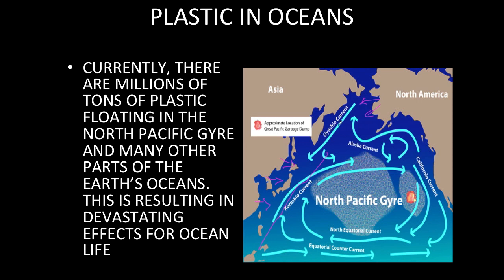Ocean currents like the Oyashio current, the Alaska current, the California current, and the Kuroshio current start to collect plastic into an area known as the North Pacific Gyre. Plastic starts to accumulate there, and scientists who have gone out to these areas are just astounded by the amount of garbage and plastic accumulating. Plastic floats, so it comes up to the surface, and some of it stays within the water — it's terrible for water quality and terrible for fish.